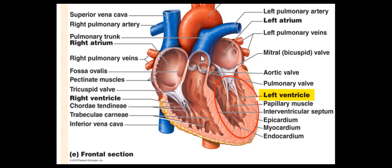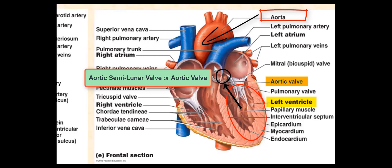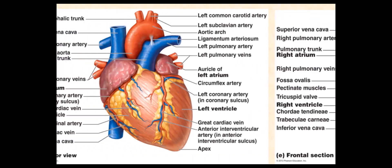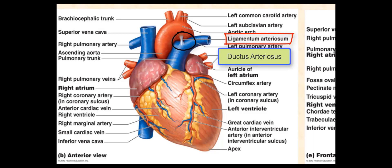The left ventricle receives blood from the left atrium. And when it contracts, it pumps blood into the aorta, a large artery and another great vessel of the heart. As blood enters the aorta, it passes through the fourth valve of the heart, called the aortic semilunar valve, or the aortic valve. There is an additional structure that attaches the pulmonary trunk at one end and the aorta at the other end, called the ligamentum arteriosum, which is a cord or band of dense collagenous connective tissue. During fetal development, this was an opening called the ductus arteriosus, which connected these two large arteries together. The ductus arteriosus will eventually close, and the ligamentum arteriosum is a remnant of it.